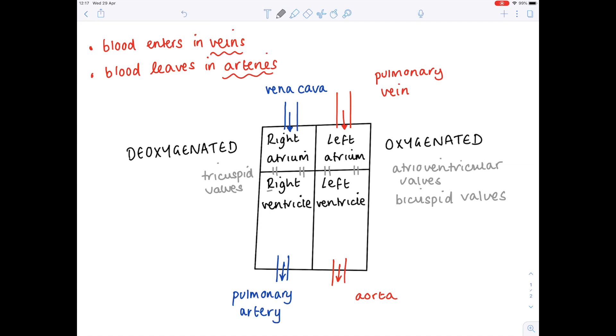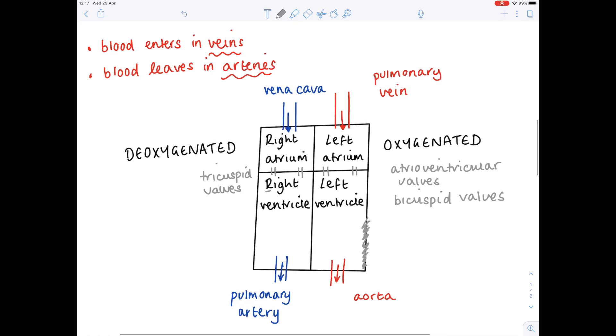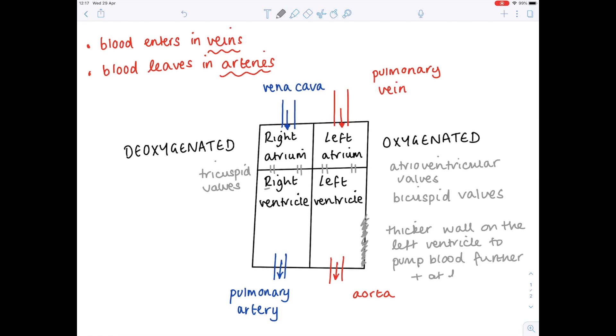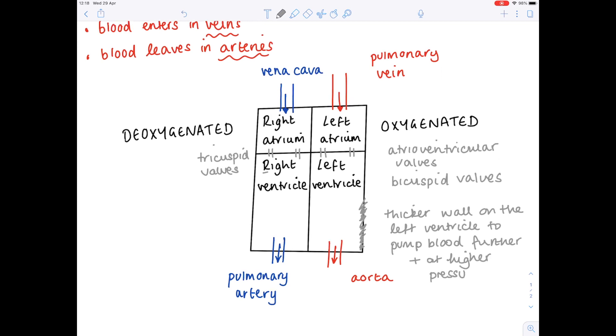So one other thing to point out is the wall of the left ventricle here is much thicker than the wall of the right ventricle. Why is that? Well if you think about it, the left ventricle is pumping blood all around the body, whereas the right ventricle is pumping blood simply to the lungs at a much shorter distance. So we have a thicker wall on the left ventricle to pump blood further and at higher pressure. But I'll just mention that again when we go now to look at the more anatomically correct diagram of the heart. But this is your overview.